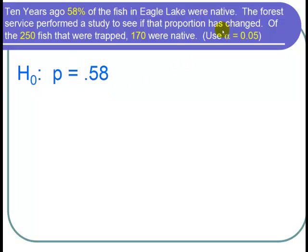And because we want to see if it has changed, that means gone up or down. H1 is that the population proportion P is not equal to 0.58. So now let's write down our cast of characters.